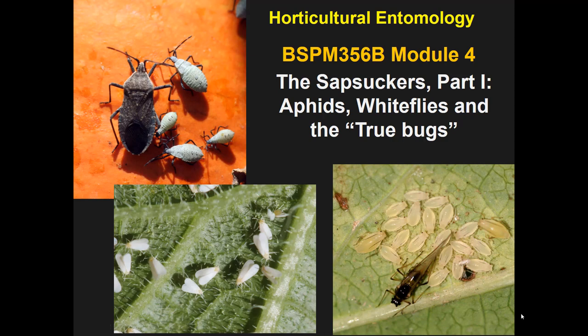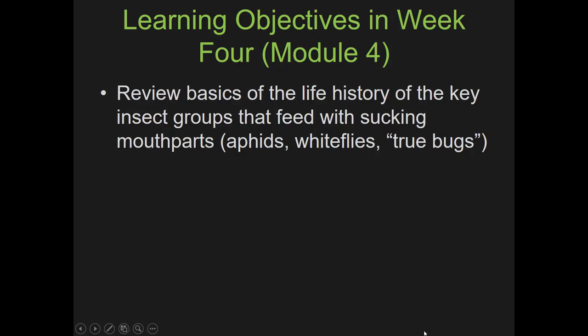This week let's shift into the kinds of insects that feed in a different way — that feed by removing fluids from the plant. Most of these are going to be in the insect order Hemiptera. We'll also later speak about thrips and spider mites which also have this habit. The learning objectives this week are to review the basics of the life history of the key insect groups that feed with sucking mouthparts.